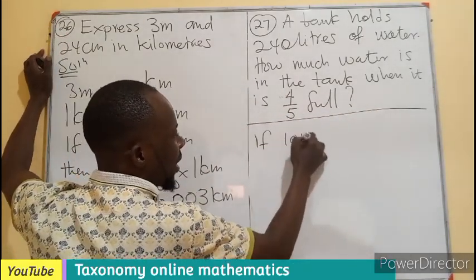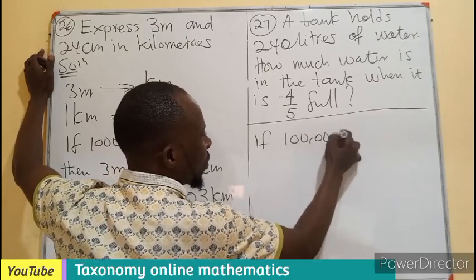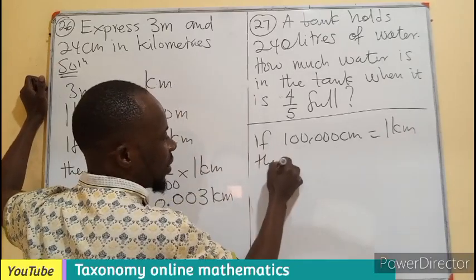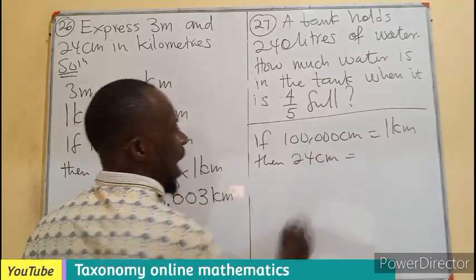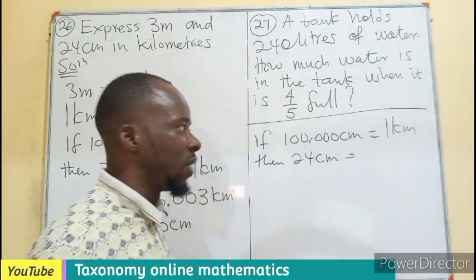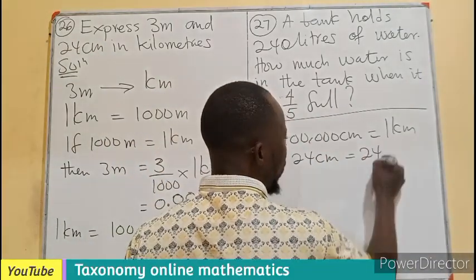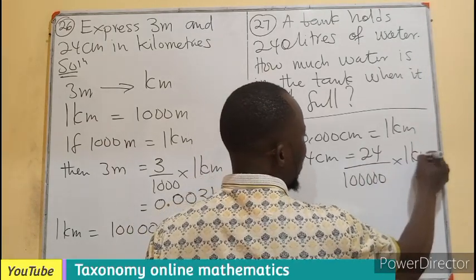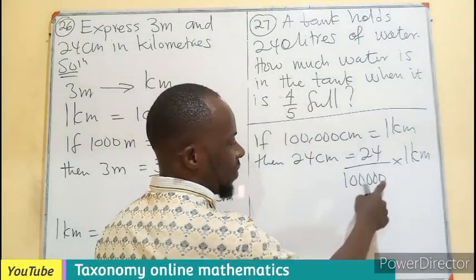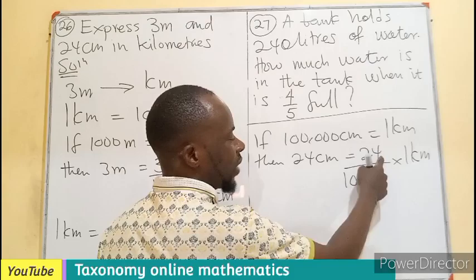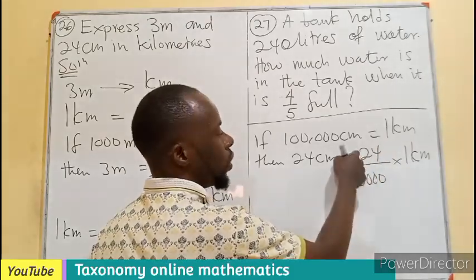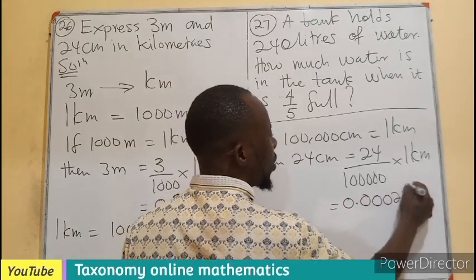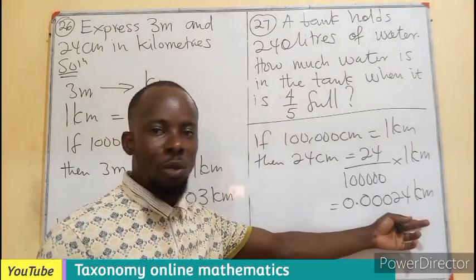So if 100,000 centimeters gives me 1 kilometer, then if I'm having 24 centimeters, I expect my answer to be less than 1. So 24 over 100,000 times 1 kilometer. The point is moving 1, 2, 3, 4, 5 places, so we get 0.00024 kilometers.